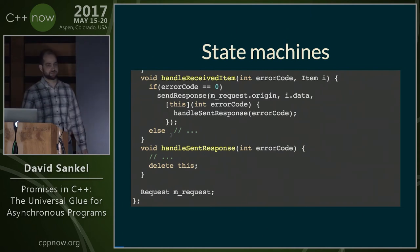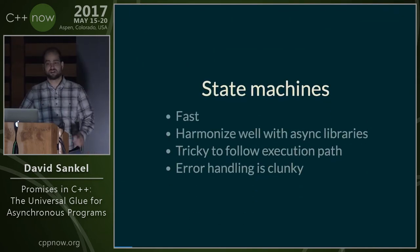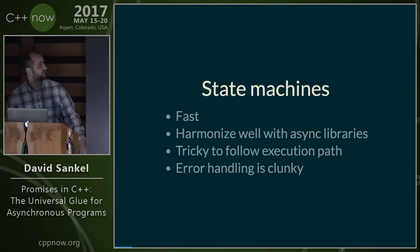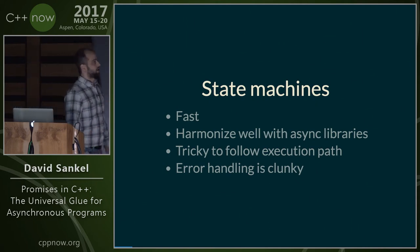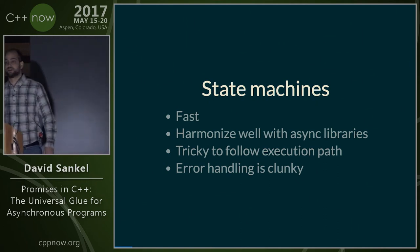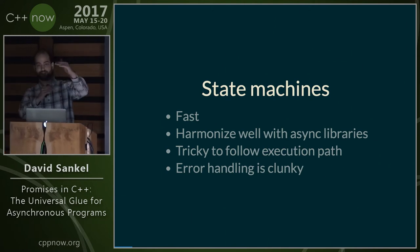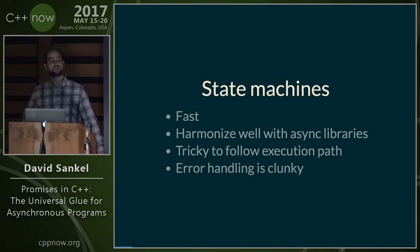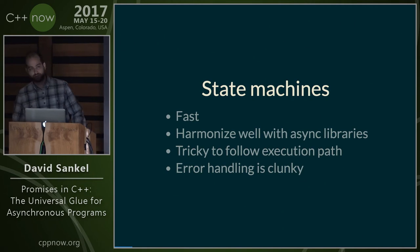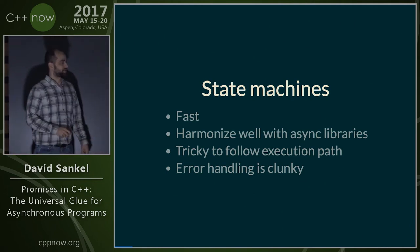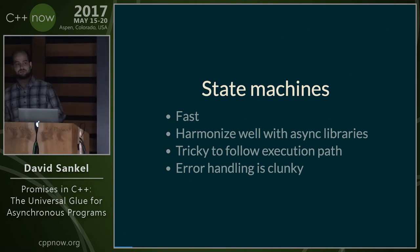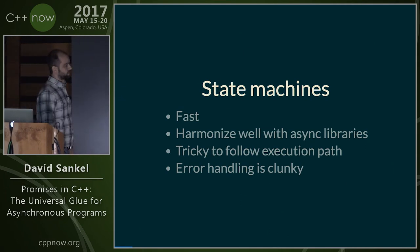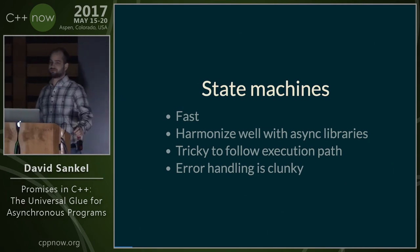State machines are fast, especially compared to the threading case, and they harmonize well with asynchronous libraries. However, it can be tricky to follow the execution path because you have callback functions scattered around, and error handling is clunky — having all these functions take an error parameter that you have to deal with explicitly every time can be a pain.